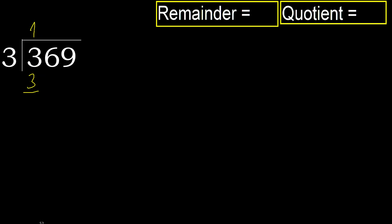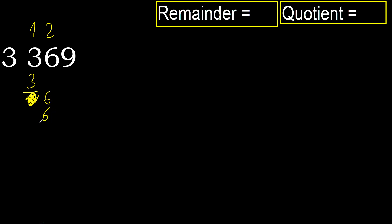Subtract: 3 minus 3 equals 0. Next, bring down 6. 3 multiplied by 2 is 6 — it's not greater. So the next quotient digit is 2.